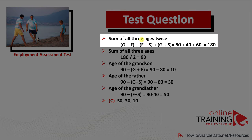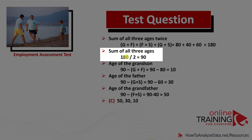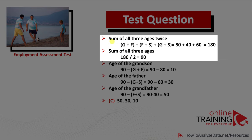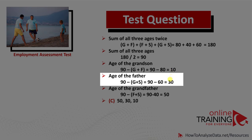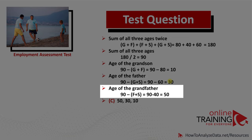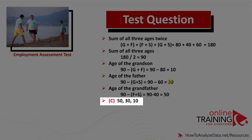To calculate the sum of all ages doubled, we add all three pairs: 80 plus 40 plus 60 equals 180. Dividing by 2 gives us 90 — the sum of grandfather, father, and grandson ages. Now we can calculate individual values: the grandson's age is 90 minus 80 equals 10; the father's age is 90 minus 60 equals 30; and the grandfather's age is 90 minus 40 equals 50. The correct answer is C: 50, 30, and 10.